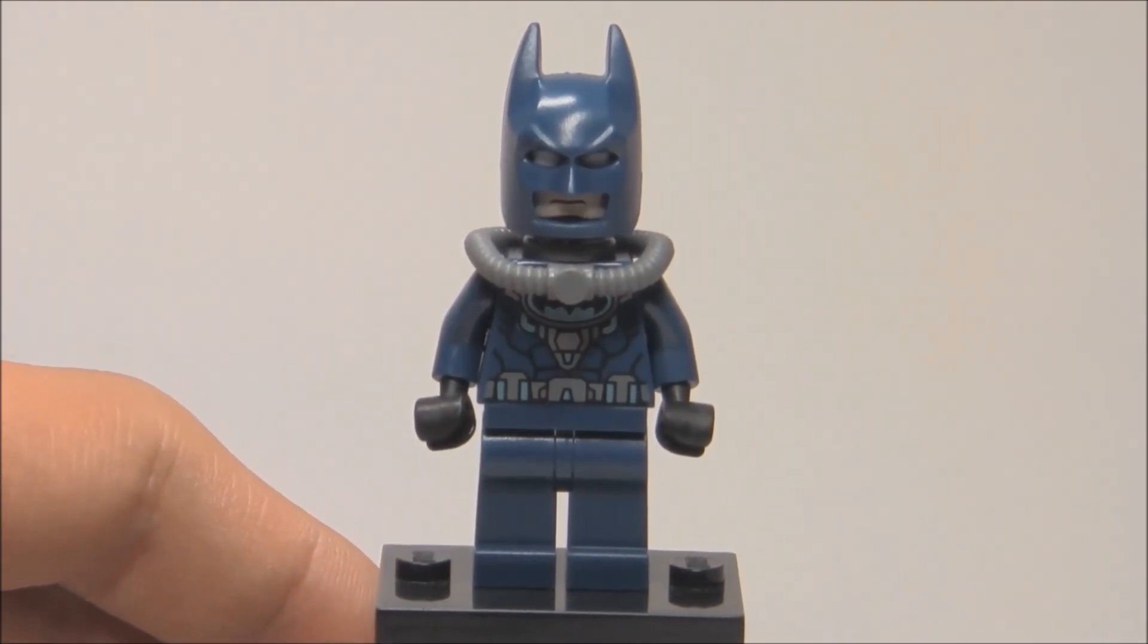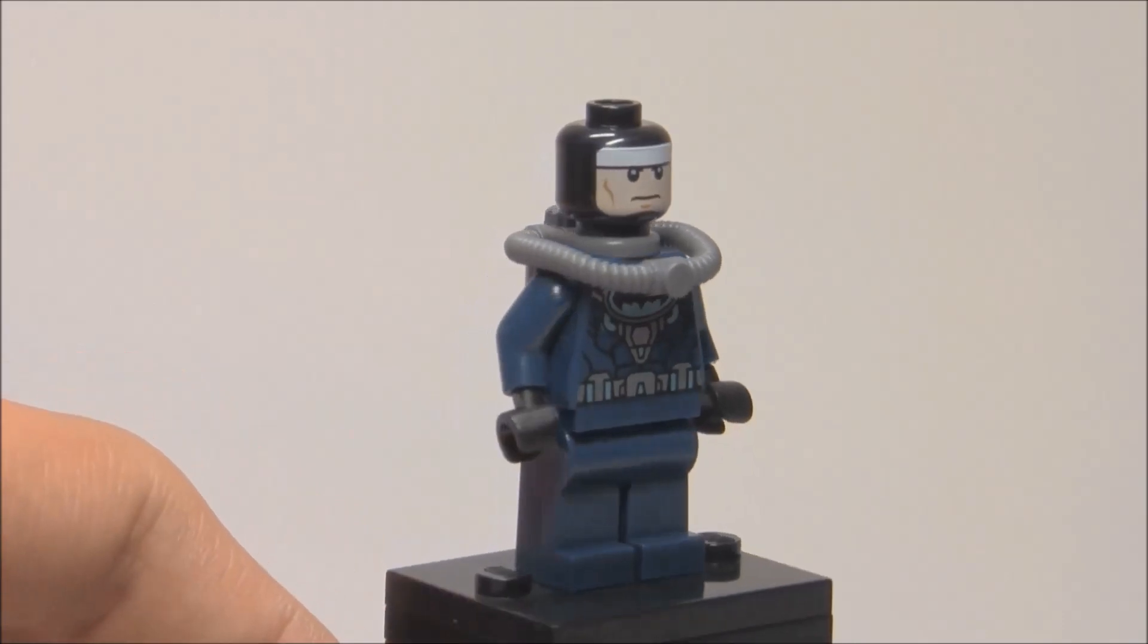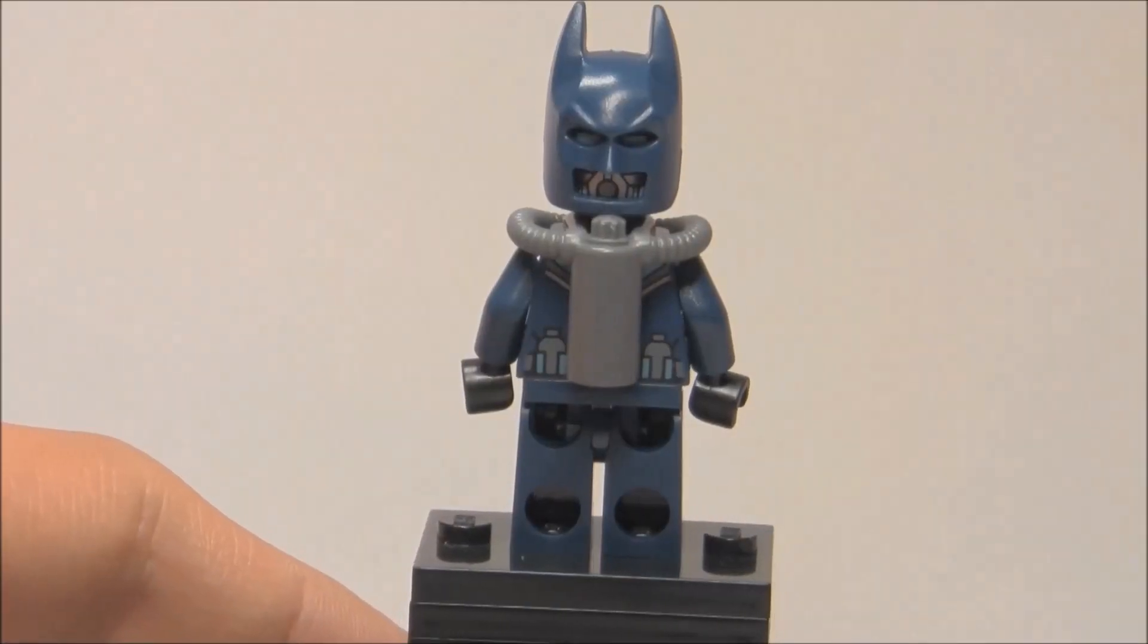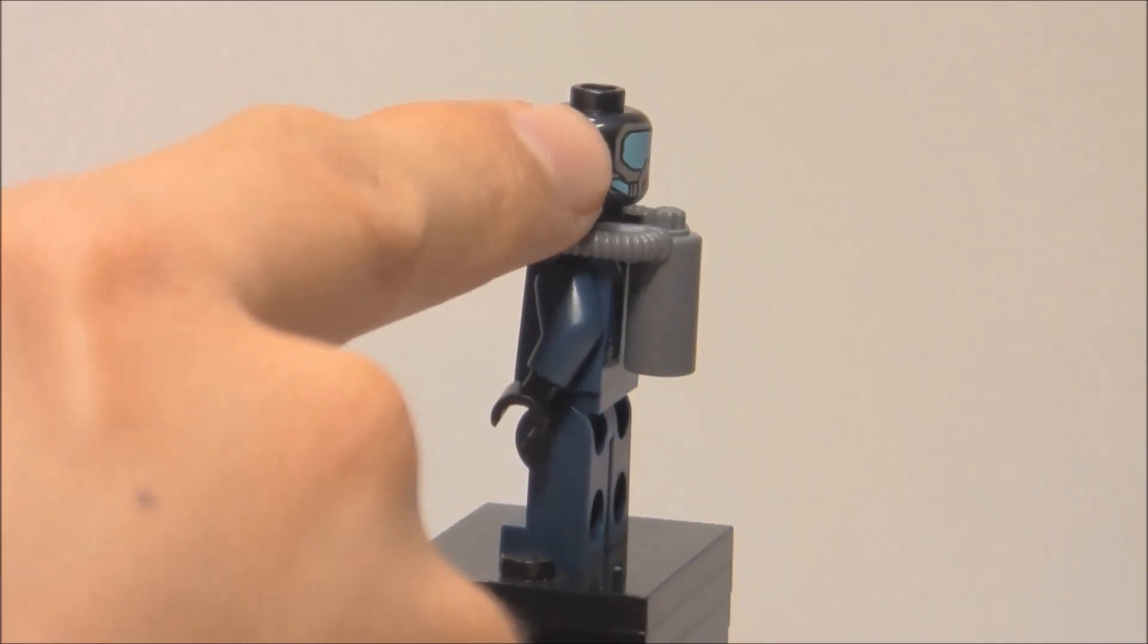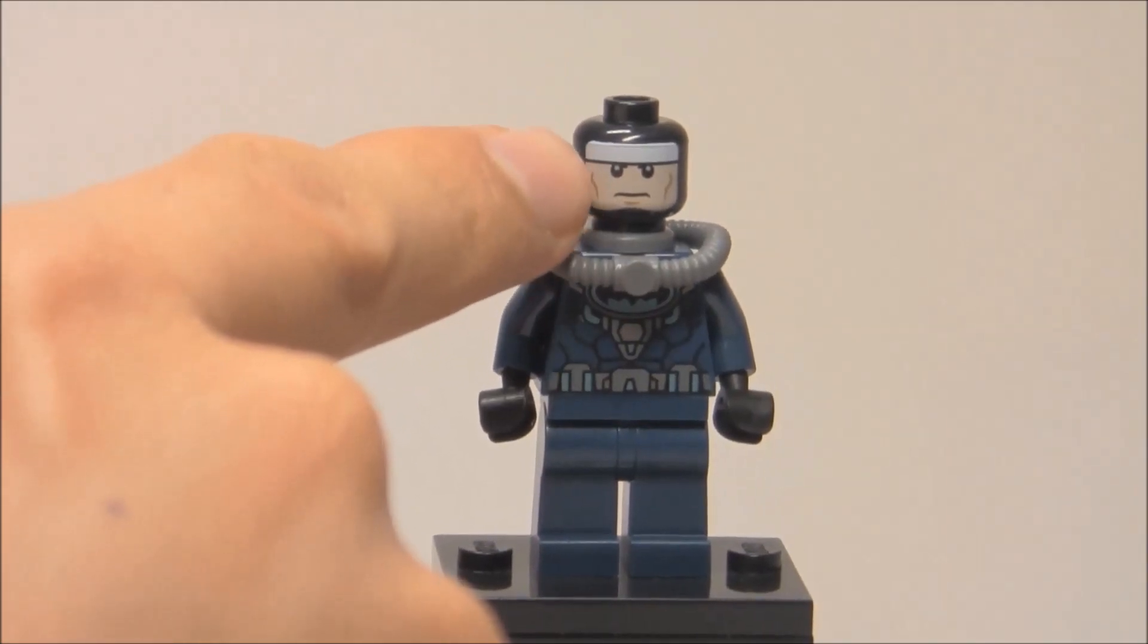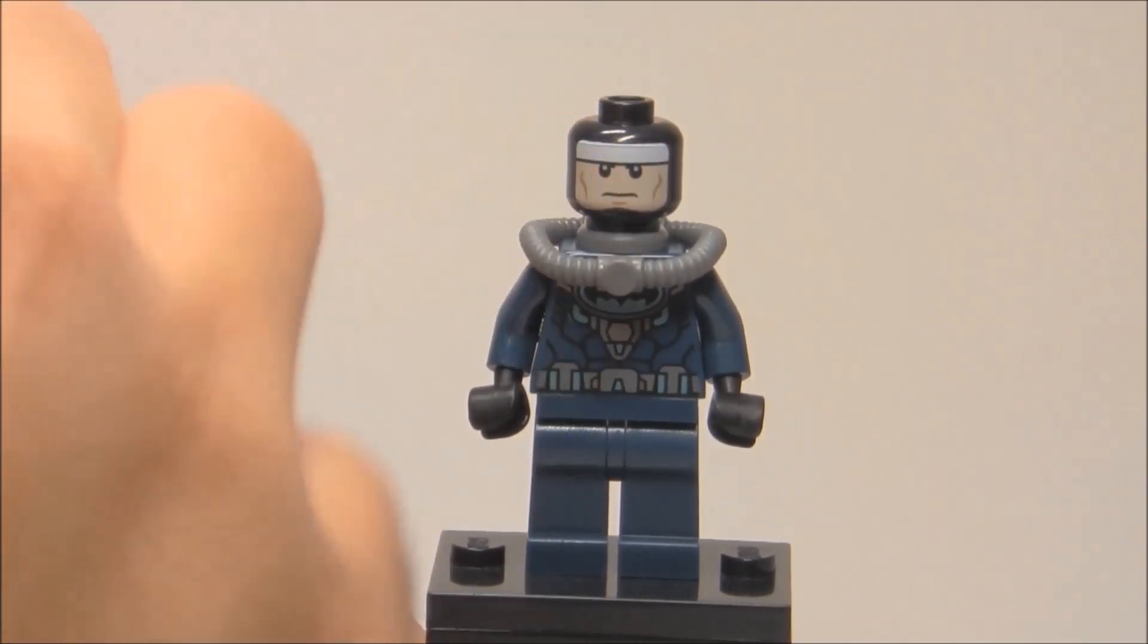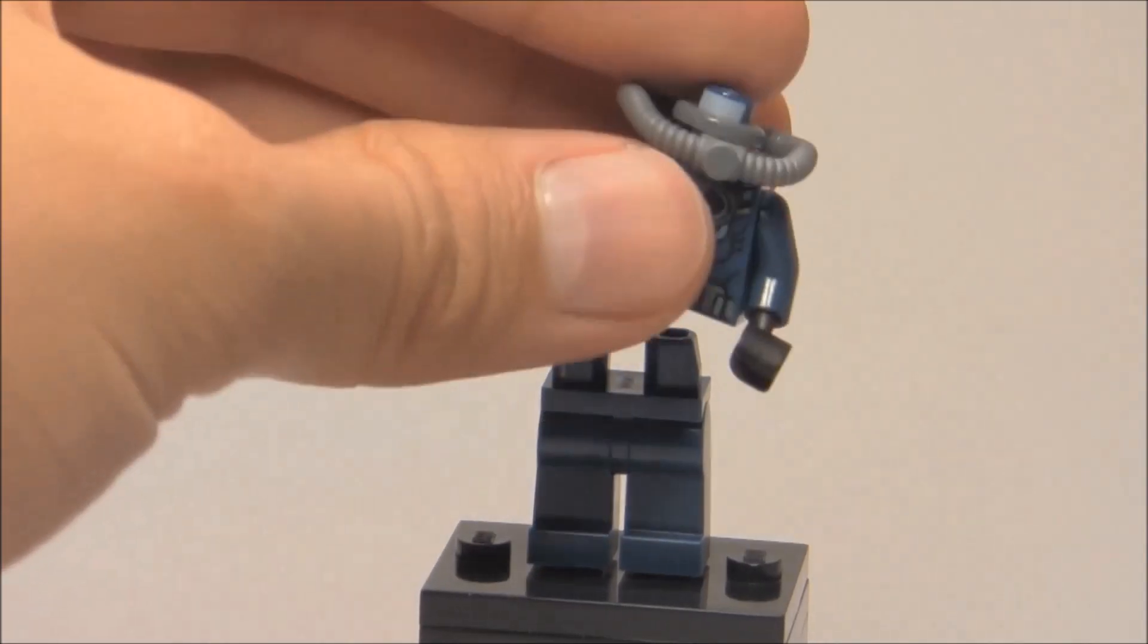The minifigure is Scuba Batman, exclusive to this set. He has that dark blue cowl from the 2012 superhero sets. That's his front face, and here's the back face with the scuba gear design. You can put it over like that and he has that mask going on. This could be used for non-Batman sets too. All this is printed over a regular black minifigure head, like the color black.